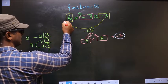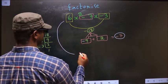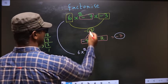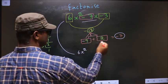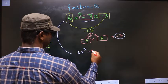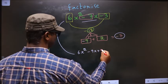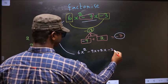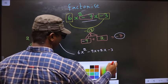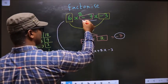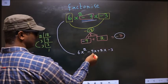Now you change this to 6x square, in place of this now you write this, that is minus 9x plus 2x minus 3. Did you understand? In place of minus 7x I have written this.